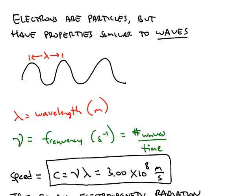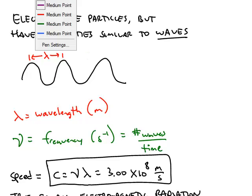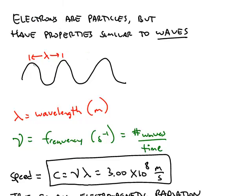To understand electrons, you have to know a little bit about waves, because even though electrons have mass — meaning they're particles — they have some properties similar to waves. What I have here is a picture of a wave, nice and perfectly symmetrical. The distance from peak to peak, or trough to trough, or any two equivalent points on the wave, is called the wavelength, abbreviated with a lambda.